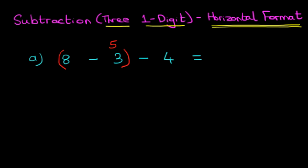Now we're going to do the second part of the equation, which is five minus four. So what is five minus four? The answer is one. So eight minus three minus four equals one.